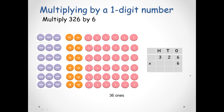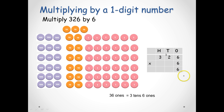We regroup or rename the 36 ones to 3 tens and 6 ones. So we write down the 6 ones and carry 3 tens. Then we multiply the 2 tens by 6 — 2 tens multiplied 6 times gives us 12 tens. 12 tens plus the 3 tens would be 15 tens, which is 1 hundred and 5 tens.